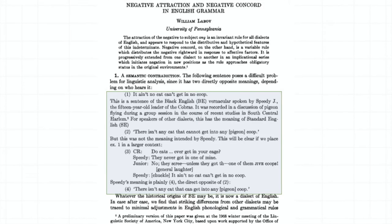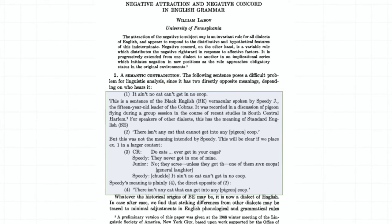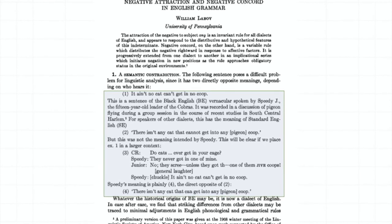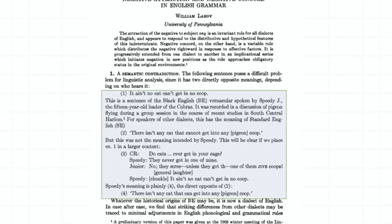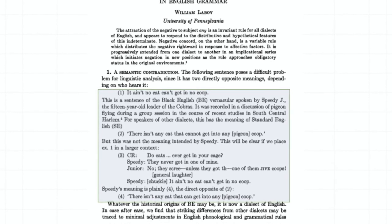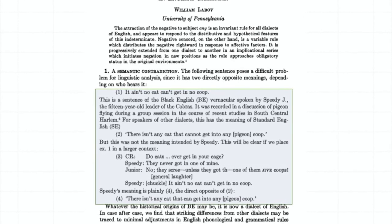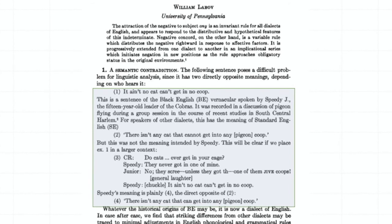Let's take a look at a classic example in sociolinguistics that's famous for other reasons. In a 1972 paper by Bill Labov, an interviewer asked somebody named Speedy if a cat ever got into his coop. He says they never got into one of his. Junior suggests, unless it's a jive coop, and Speedy counters with the now famous, it ain't no cat can't get in no coop.